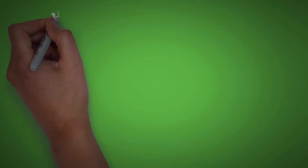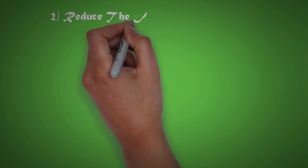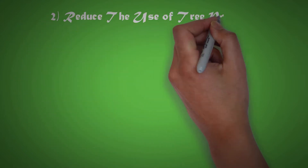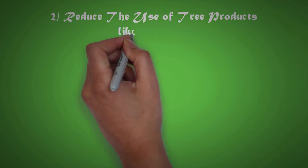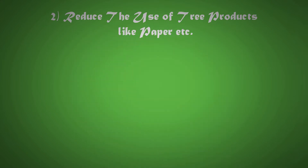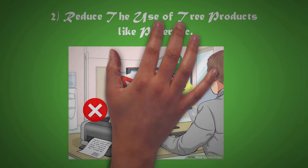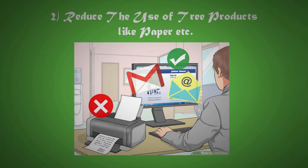Now the second method to counteract deforestation is to reduce the use of tree products like paper, and also try to recycle tree products to enhance sustainability.